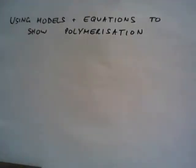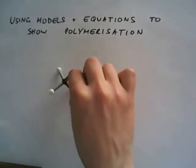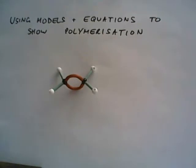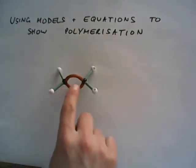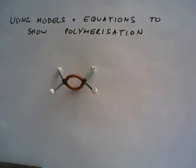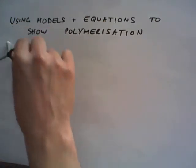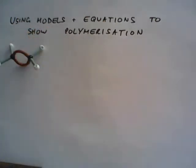Firstly, let's look at the polymerization of ethene to make polythene. I've got here my little model of ethene, C2H4. You can see the double bond in the middle there between the two carbon atoms and four hydrogens around the outside. Representing that as a chemical formula would be C2H4.